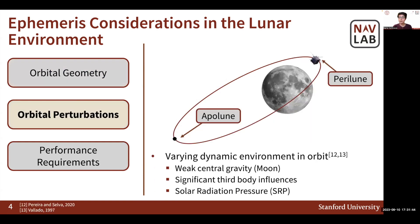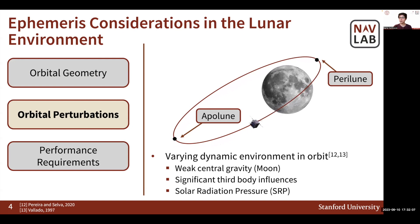Another consideration involves orbital perturbation. Ephemeris parameters must be able to capture the varying dynamic environment that a satellite experiences while in orbit. Specific to lunar orbits, the satellite experiences weak central gravity from the main gravitational body, the Moon, and also experiences significant third-body influences and solar radiation pressure. The closer the satellite is to the Moon, near perilune, the stronger the gravitational pull from the Moon. However, the further away, near apolune, perturbations from the outer body and solar radiation pressure have stronger influences on the satellite dynamics.